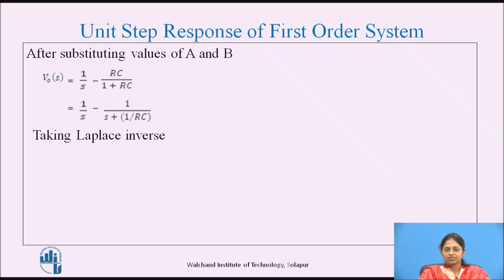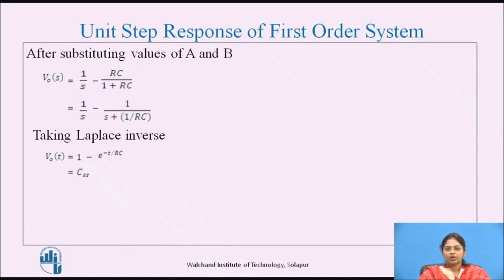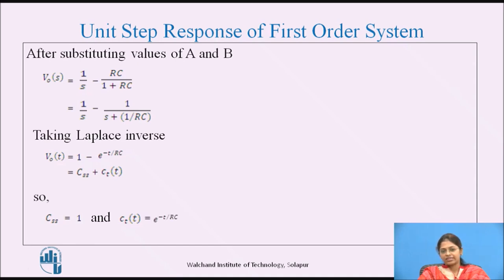Taking the Laplace inverse, the output response in the time domain is written as V(t) = 1 − e^(−t/RC). Here, 1 represents the Laplace inverse of 1/s, and e^(−t/RC) represents the Laplace inverse of 1/(s + 1/RC). The output response consists of two parts: the steady state response C_ss and the transient state response C_tr(t). Comparing both equations, the steady state response equals 1 and the transient state response equals e^(−t/RC).